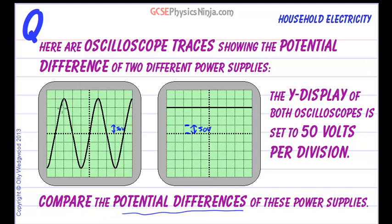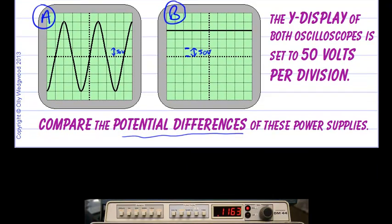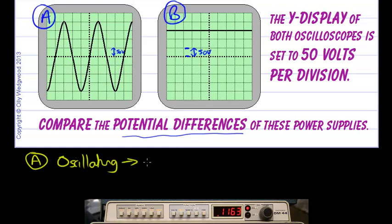First of all, the shape is different. Let's call this case A and this case B. For case A, we've got an oscillating waveform. We could call this an AC waveform where AC stands for alternating current. I know we're looking at voltage but the current will be doing the same thing. How big is this voltage? We can use the Y display to work that out.